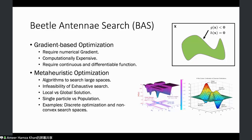To understand Beetle Antenna Search and other meta-heuristic optimization techniques, we need to talk about the background starting with gradient-based optimization. Traditionally, whenever we need to solve an optimization problem, we take the gradient and use a gradient-based technique like gradient descent to find the minimum value. However, there are several shortcomings: they require a numerical gradient, which is not always possible; it is quite computationally expensive; and it requires that the function is continuous and differentiable.